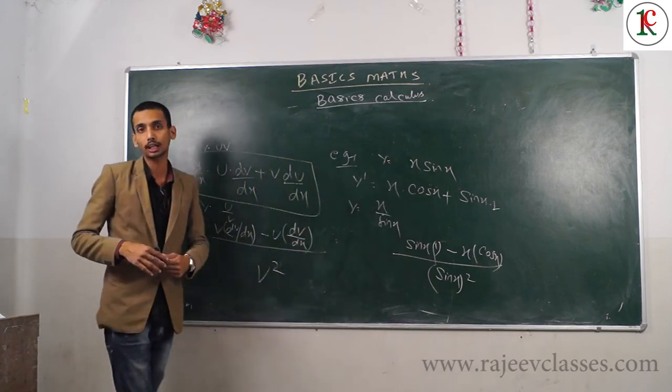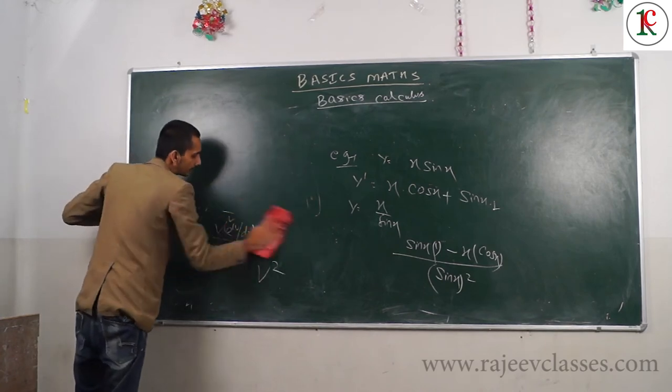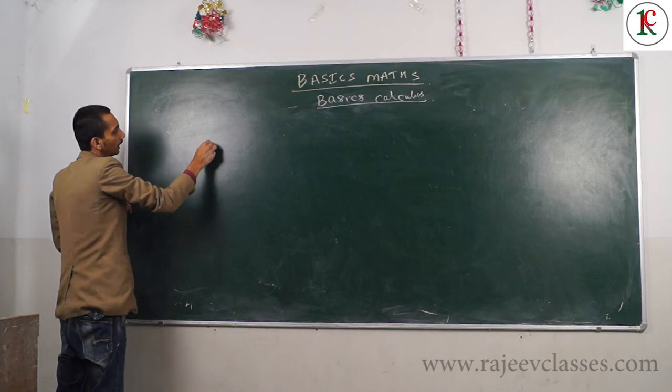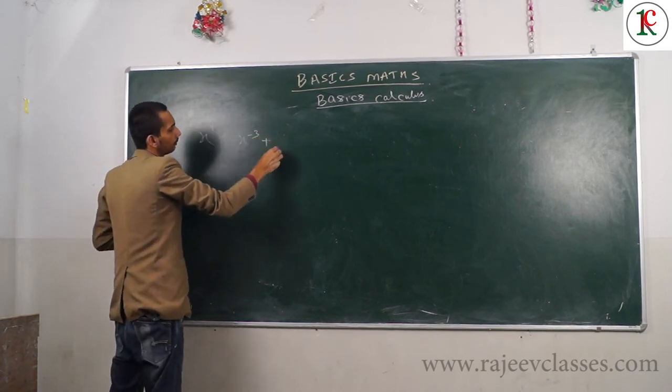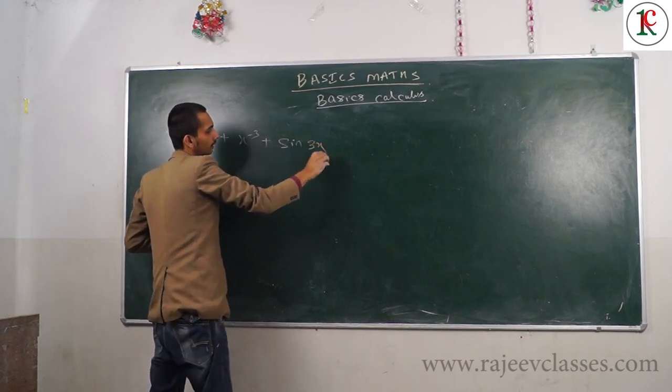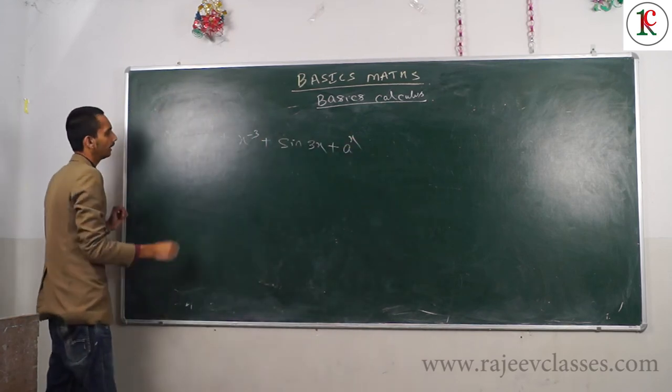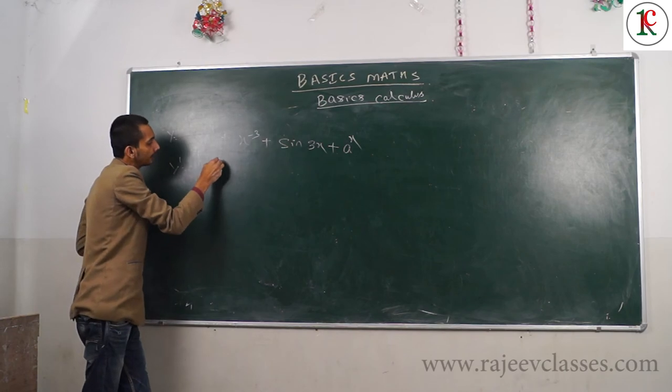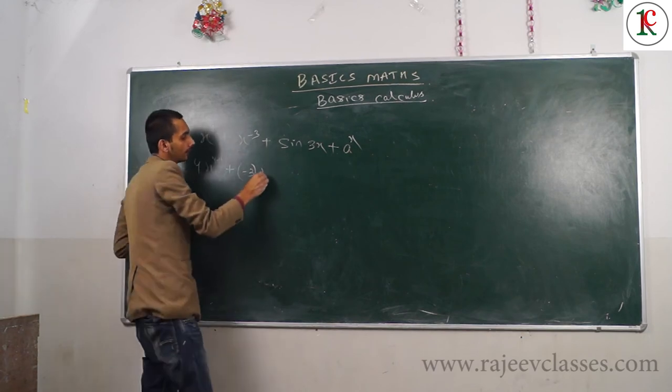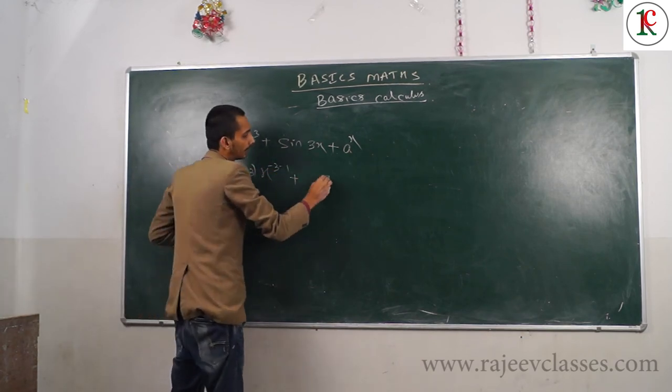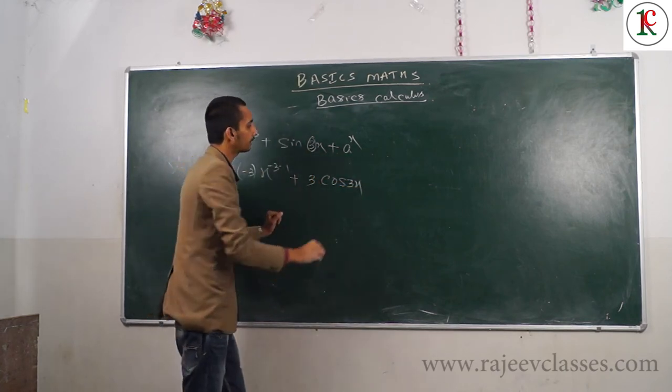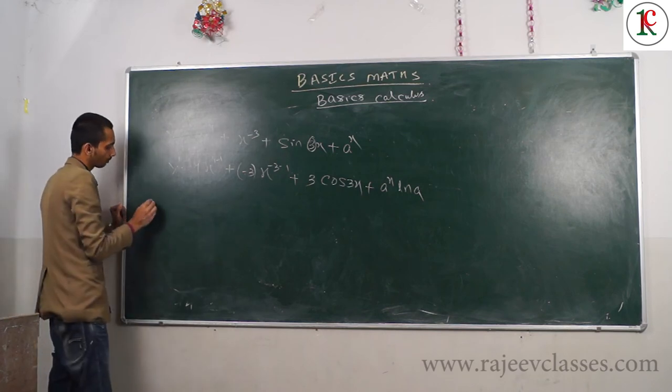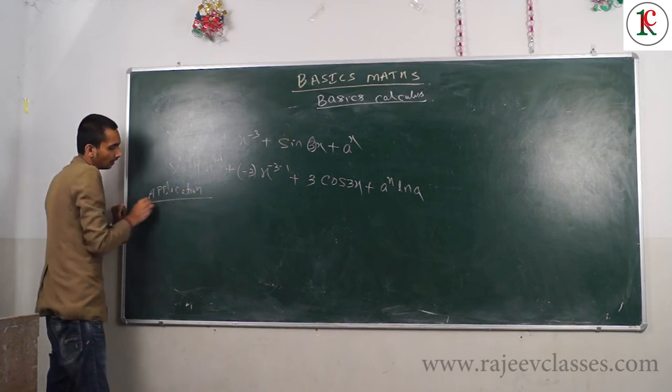Now let's apply differentiation to solve a problem. Suppose Y equals X to the power 4 plus X to the power minus 3 plus sin 3X plus a to the power X. Differentiating: 4X to the power 3 plus minus 3X to the power minus 4 plus 3 cos 3X plus a to the power X times ln a. This is how you calculate differentiation using the formulas.